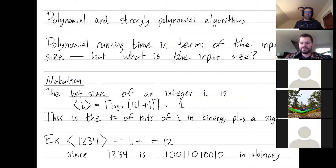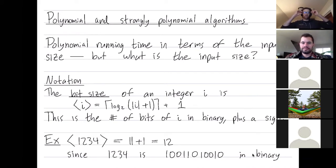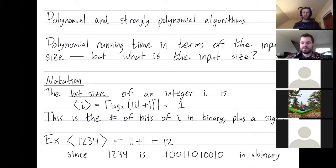Welcome, everybody. I'd like to talk about polynomial algorithms versus strongly polynomial algorithms. This is the sense in which the ellipsoid method solves a linear program in polynomial time. However, it doesn't solve linear programs in strongly polynomial time. This stuff is quite new to me, but I think it's really fascinating and I'd like to learn more about it.